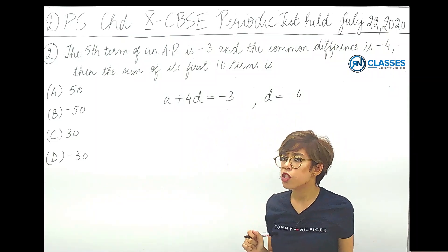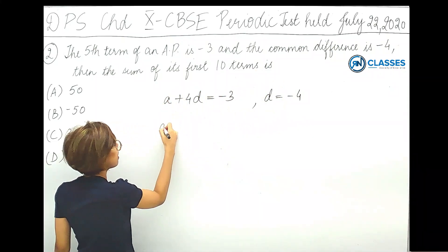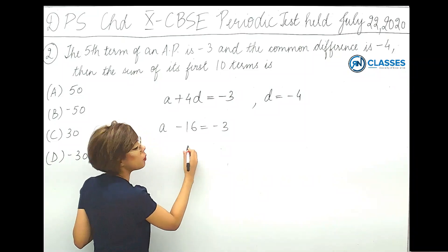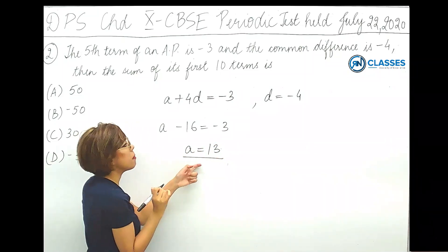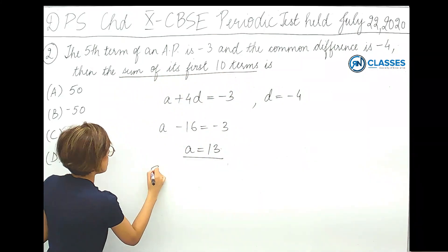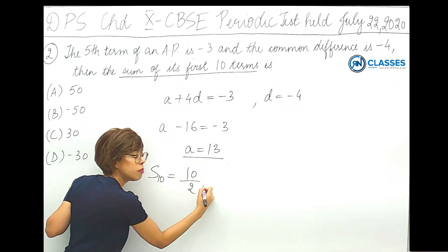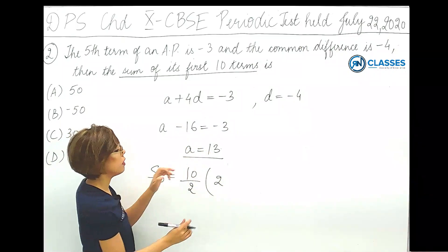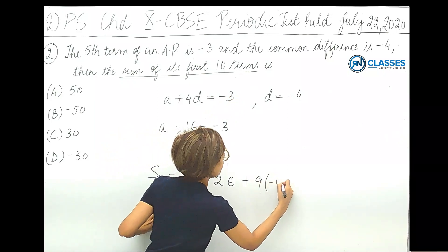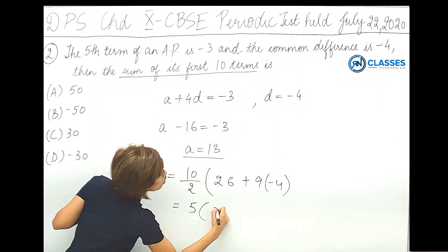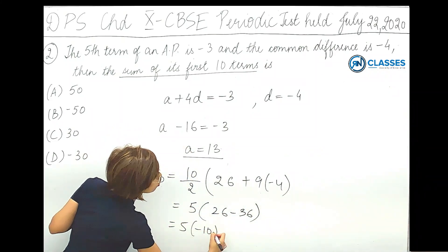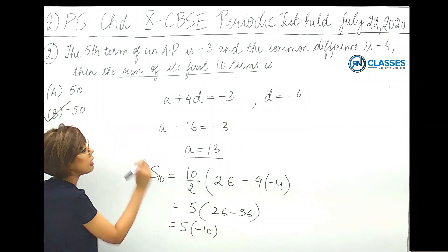Substituting d equals minus 4: a plus 4 into minus 4 equals minus 3, so a plus minus 16 equals minus 3, giving a equals 13. Using the sum formula: S10 equals 10 by 2 into 2 into 13 plus 9 into minus 4, which is 5 into 26 minus 36, equals 5 into minus 10, which is minus 50. So option B is correct.